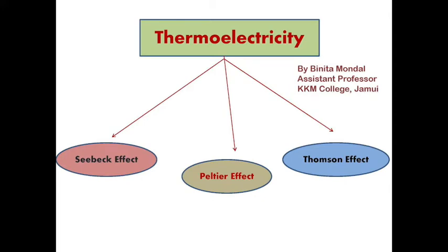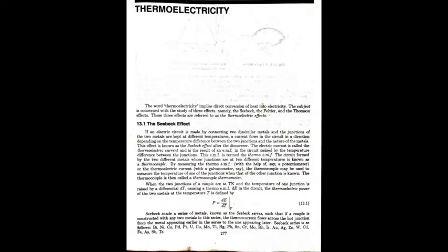Seebeck Effect is such that if we take a thermocouple made up of two dissimilar metals and if the junctions of two metals are kept at different temperatures, then EMF is produced and current flows in the circuit. This is Seebeck Effect.